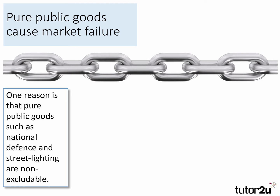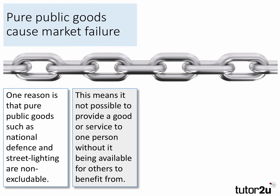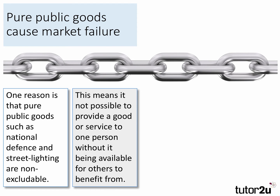So pure public goods cause market failure. One reason — and of course there are many reasons — one reason is that pure public goods, such as national defence and street lighting, are non-excludable. This means it's not possible to provide a good or a service to one person without it being available for others to benefit from. That's the third link in the chain.